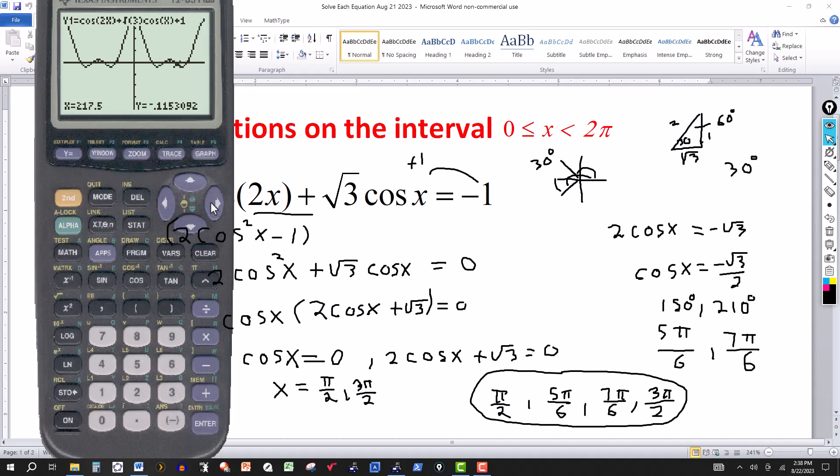We have one more to go here. Press the arrow. There it is, 270, or 3 pi over 2.